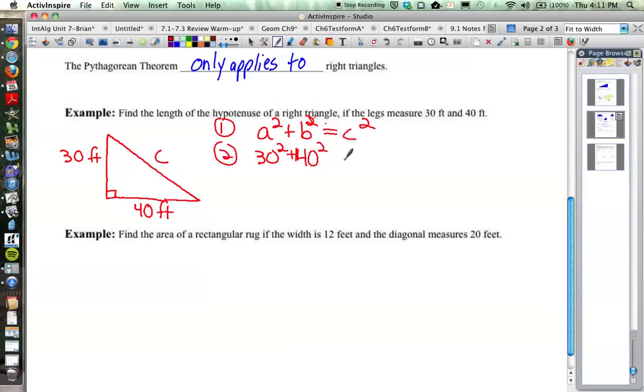40 squared and how does that compare to c squared? So now we've got step three. We're going to work out our numbers. 900 plus 1600 is equal to c squared. That would be 2500 is equal to c squared.